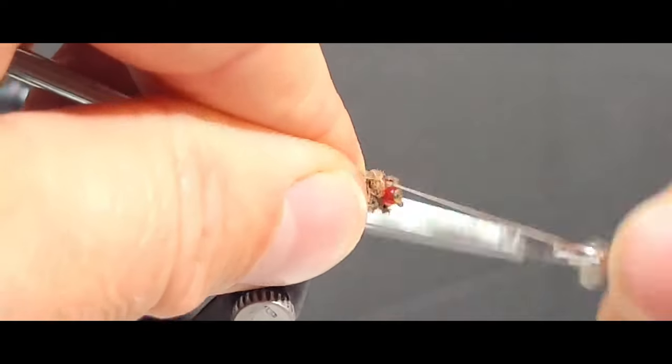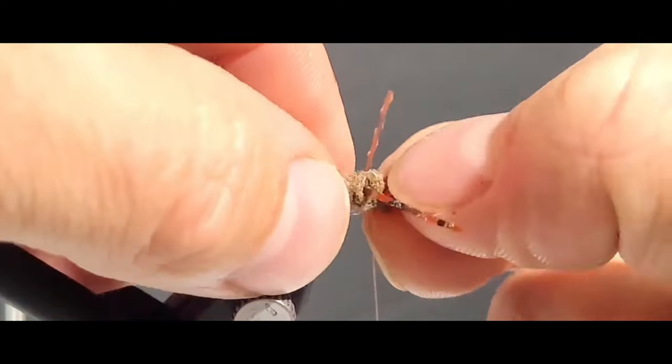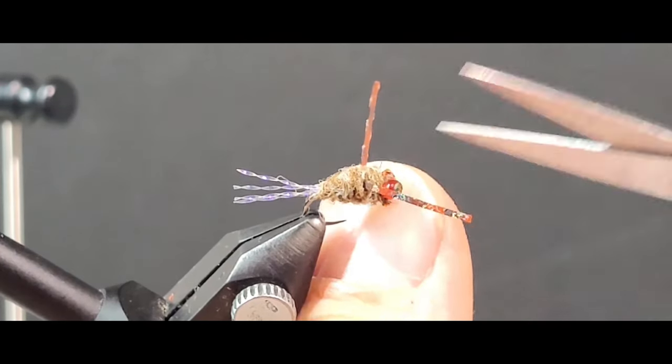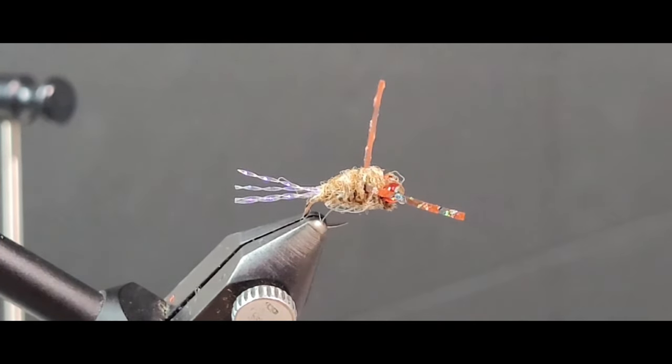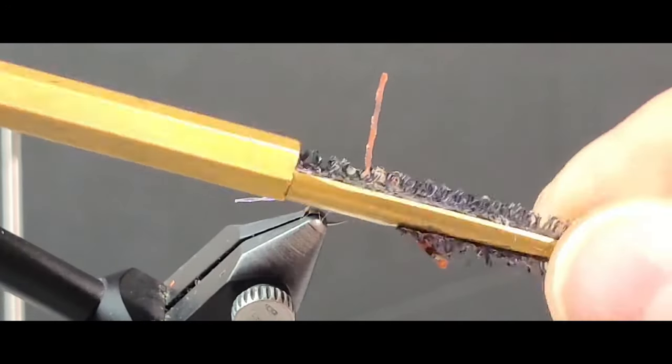While I have a minute here I just want to talk about the Semper Fly Dry Fly Poly Yarn. It's really neat stuff, it's got quite a bit of buoyancy to it. I use it for a lot of my dry fly patterns.